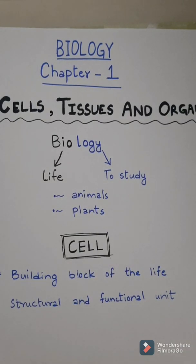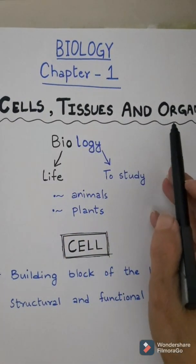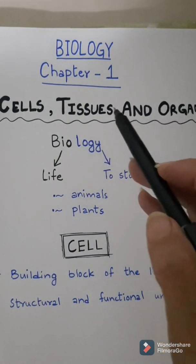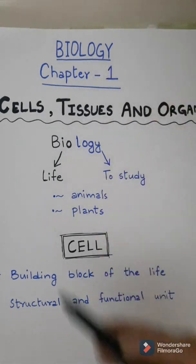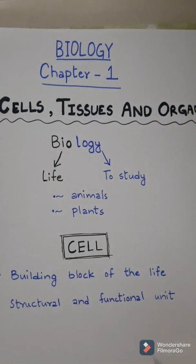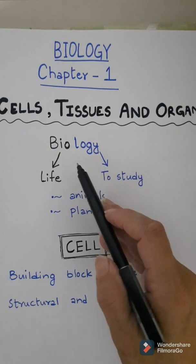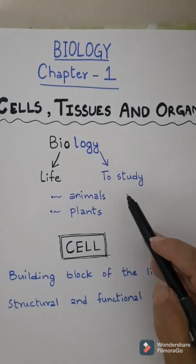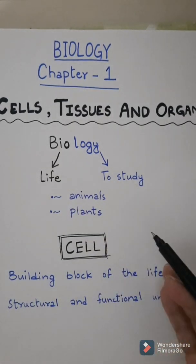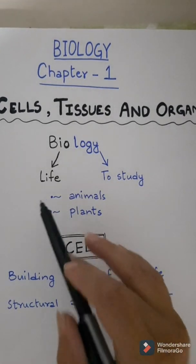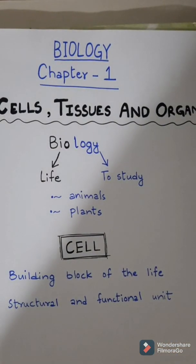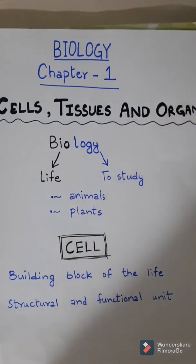Now I will start Chapter one: Cells, Tissues, and Organs. Dear students, this chapter belongs to the branch of science called biology. The word biology is derived from two words: bio means life and logos means to study. So biology is that branch of science which deals with living things — animals and plants. In this chapter, I will teach you concepts relating to plants and animals.